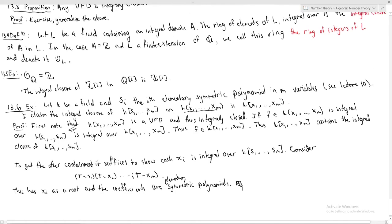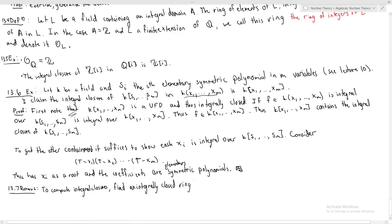While it's a somewhat lengthy example, it shows you a useful technique for computing the integral closure of things. Remark 13.7: to compute integral closures, find an integrally closed ring — and in this case we found a UFD — containing your interesting ring.